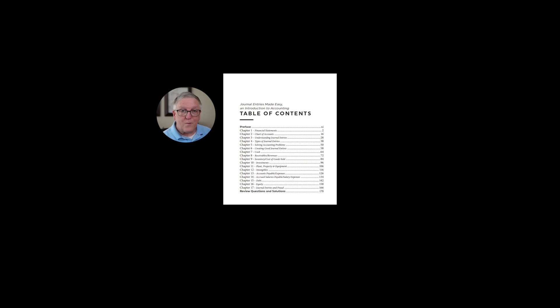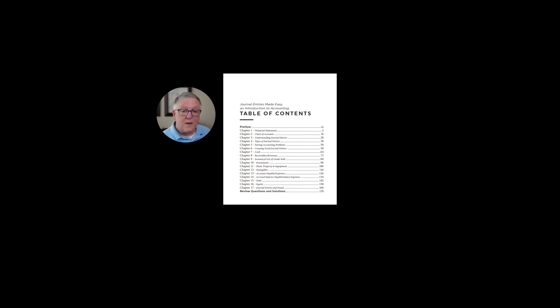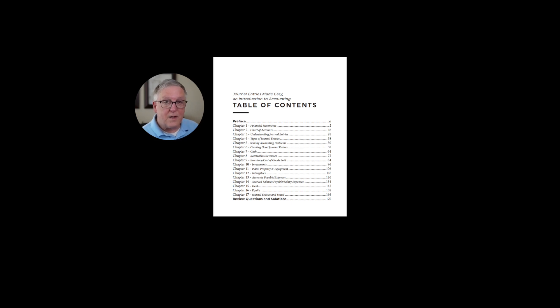I also cover the types of journal entries — there are several different types — and solving accounting problems: when you run into issues in your accounting, how do you solve those errors? Also, how to create good journal entries. Once you get through those six chapters, we get into examples of journal entries by account balance or transaction class. For instance, in the cash chapter you'll see journal entries for deposits into a checking account or paying accounts payable. Later, in the intangibles chapter, you'll see accounting for things like trademarks or right-of-use assets, and in accounts payable, how to accrue expenses and reverse those accruals.